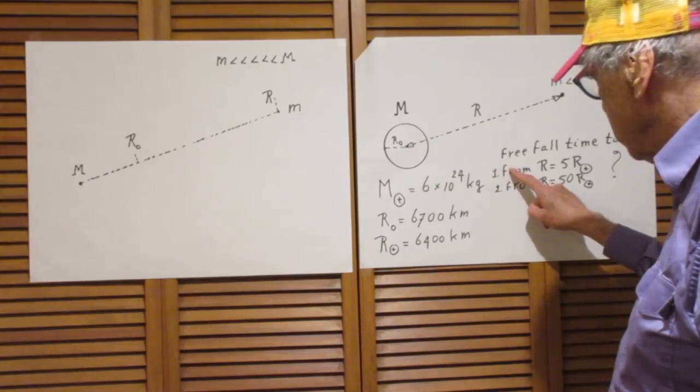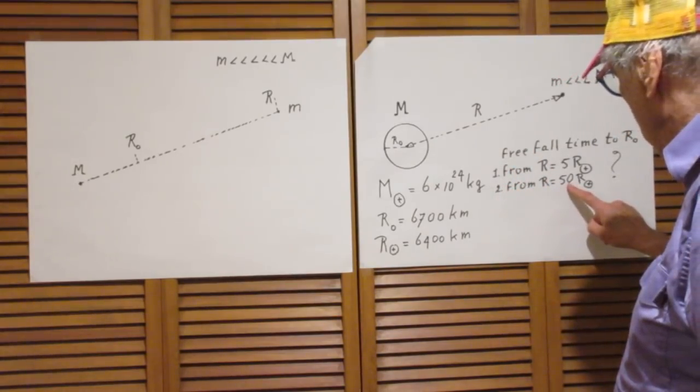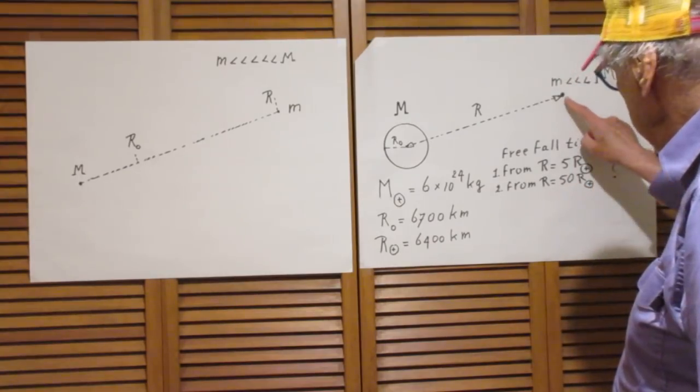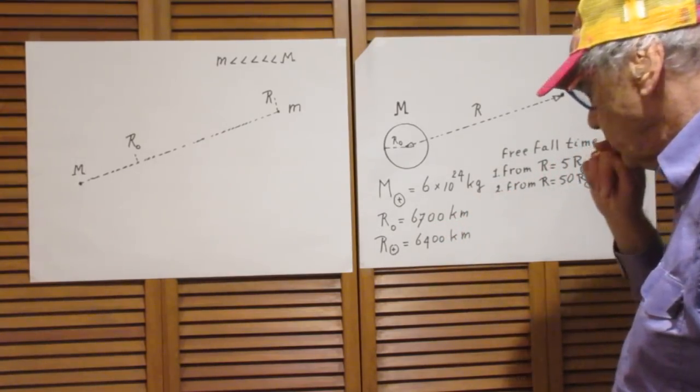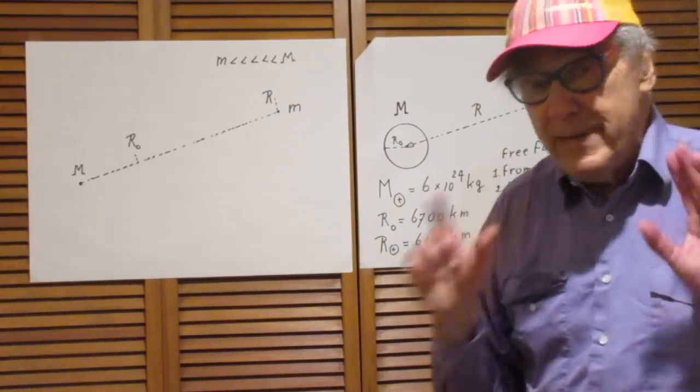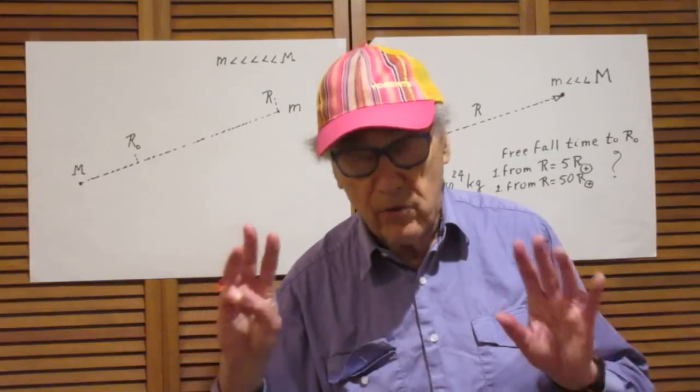So I want the free-fall time from 5 Earth radii to 6700 kilometers. That's question one. And question two is I want the free-fall time from 50 Earth radii to 6700 kilometers. Please give your answer in hours. Three digit precision is fine.